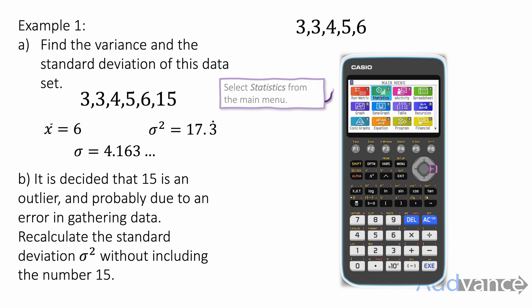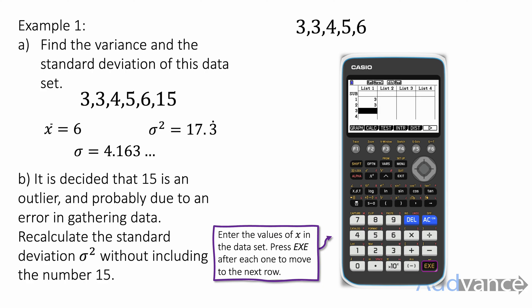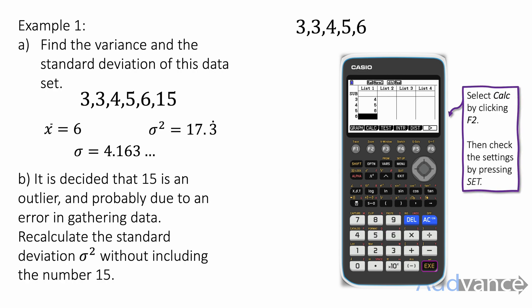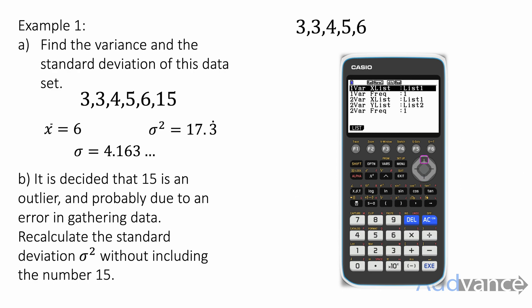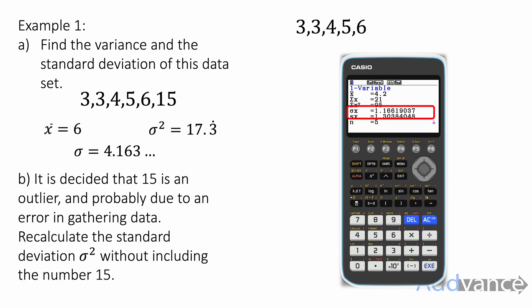This time we'll do it on a calculator. We go to the statistics menu and start entering our data: 3, 3, 4, 5, and 6, pressing Execute each time — that's short for execute, which just means equals. I'm using the CG50 here, my favorite graphing calculator. When I've finished, I go to Calc and then Settings to check the settings — the first two rows are set to List 1 and 1. I go to Exit, then choose option 1 by clicking F1. That gives me the standard deviation: 1.166.